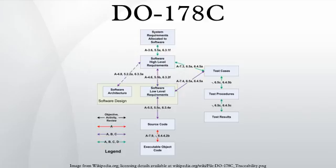Hazardous: failure has a large negative impact on safety or performance, or reduces the ability of the crew to operate the aircraft due to physical distress or a higher workload, or causes serious or fatal injuries among the passengers. Major: failure significantly reduces the safety margin or significantly increases crew workload, and may result in passenger discomfort. Minor: failure slightly reduces the safety margin or slightly increases crew workload. Examples might include causing passenger inconvenience or a routine flight plan change.